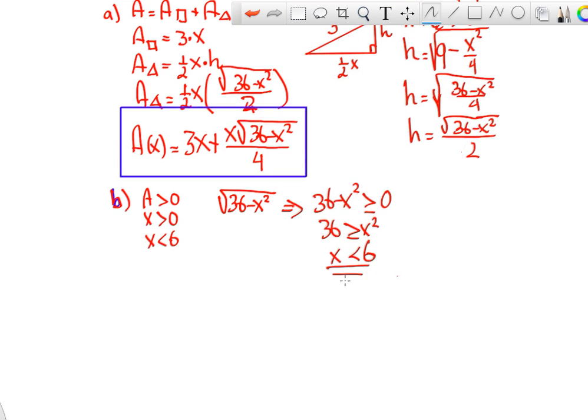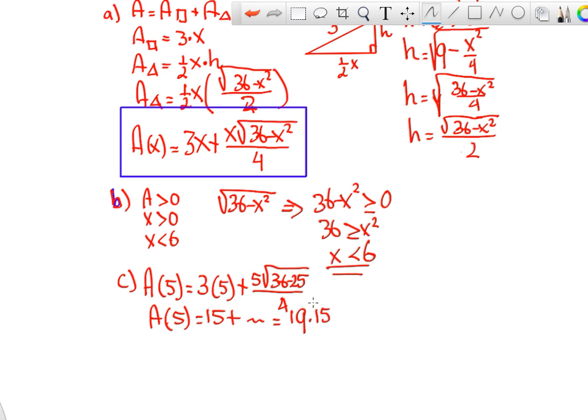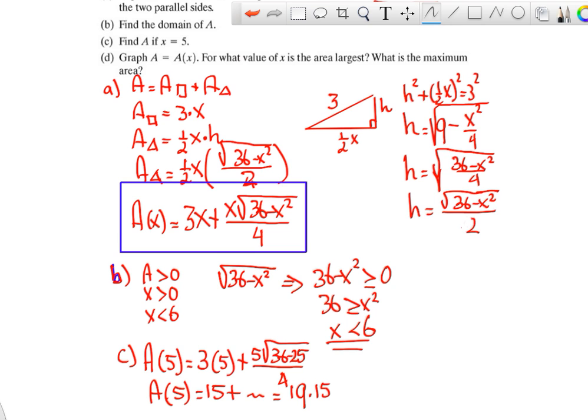Find the area if x is 5, so we can just plug in a 5. 5 squared is 25. And because this is a word problem, we certainly can plug this in. So that's 15 plus, get a calculator, plug it in. And then, I'm going to cheat, I did this already. So that's 19.15. So that's the area at 5.